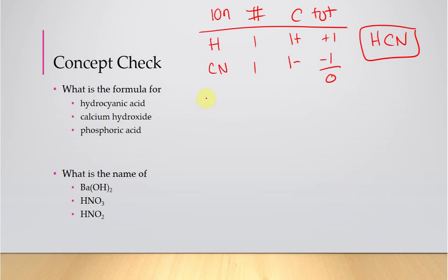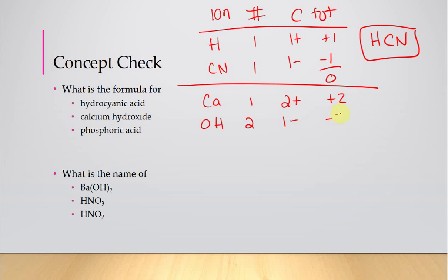For calcium hydroxide: Ca and OH. Calcium is in group 2, so +2 charge; hydroxide is −1, memorized. We need 1 calcium and 2 hydroxides: 1 × 2 = +2 and 2 × (−1) = −2; that gives zero — a neutral compound. Since there's more than one polyatomic ion, use parentheses: Ca(OH)₂.